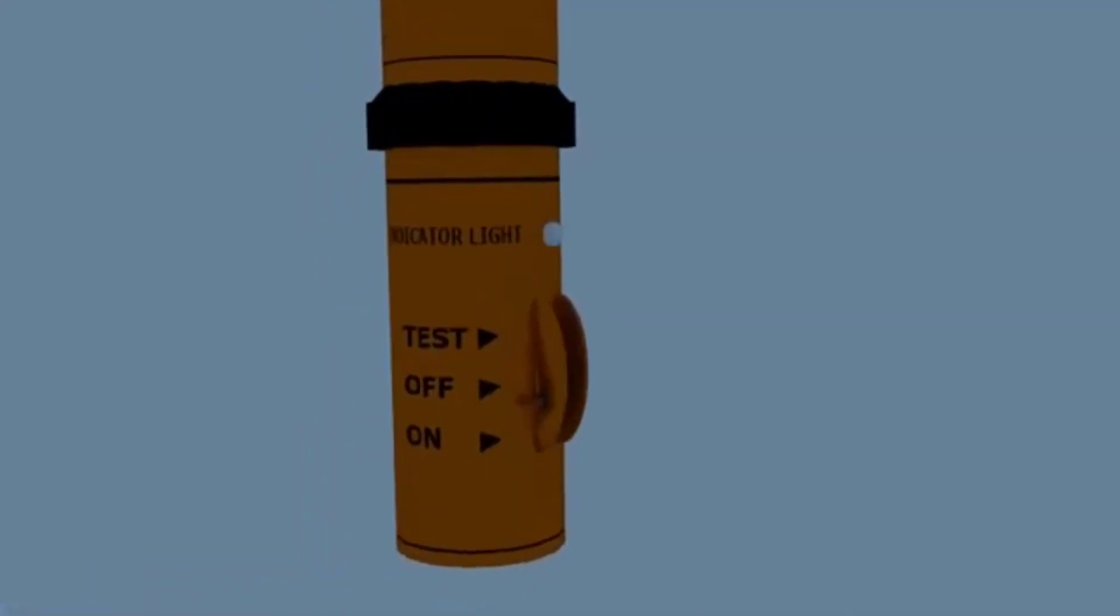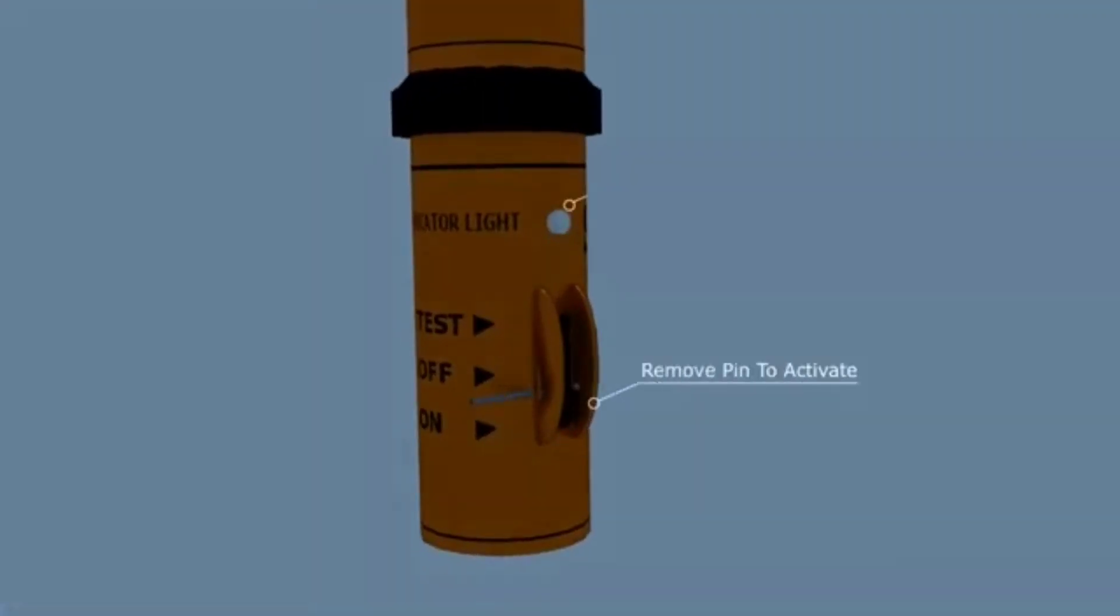To activate the SART, you normally just need to remove a pin. It should then indicate to you that it's working.